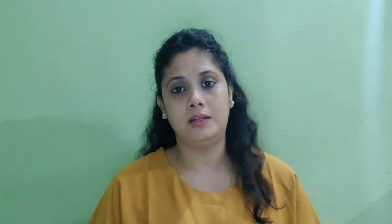Human memory is not selective. Therefore, the image of 'happy autumn fields' is followed by the image of a dying man. Another technique used by the poet is personification. In the phrase 'happy autumn fields,' he has used a figure of speech called transferred epithet. It is not the autumn fields which are happy, but the person looking at them. So this is an example of transferred epithet — he transfers his feelings through the autumn fields. The autumn fields are described as happy, but actually the poet feels the happiness and reflects it through the autumn fields, creating a poetic effect from person to field.